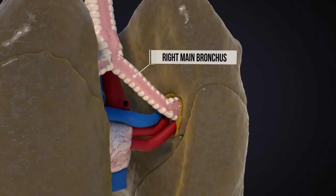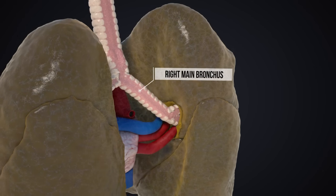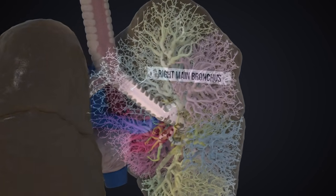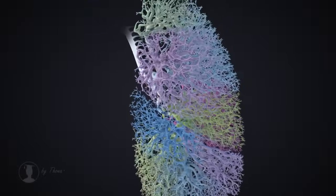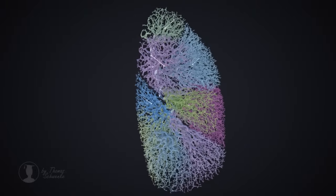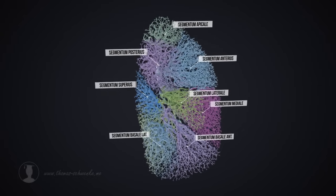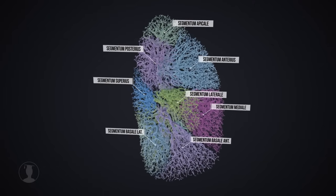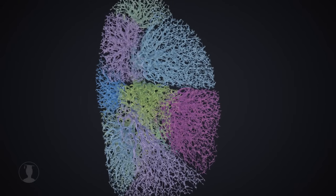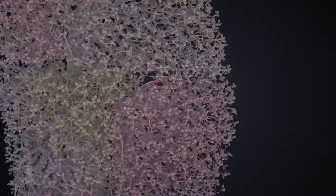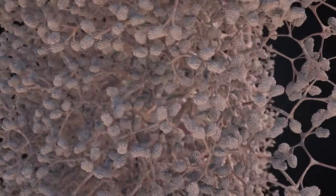The main bronchi form the trunks for the bronchial tree. Like the branches of a tree, the tubular system of the lungs starts here, dividing into finer and finer branches. The right lung has three lobes with ten lung segments, and each lung segment receives its own air and blood supply. At the ends of the bronchial tree are tiny air sacs called alveoli. It is estimated that humans have 300 to 400 million alveoli.